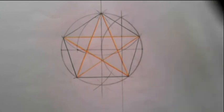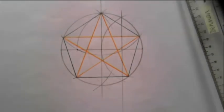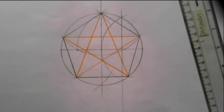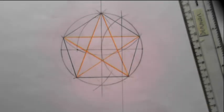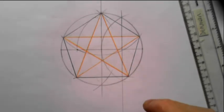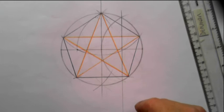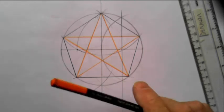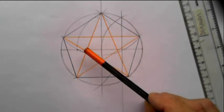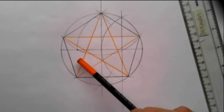Pentagram. Everyone recognizes this from magical symbolism and it's no coincidence that it is a magical symbol because it has a huge number of very complex geometrical properties, and the Pythagoreans used it as their symbol. That's how it became a magical symbol.